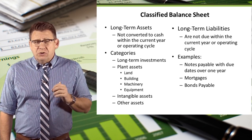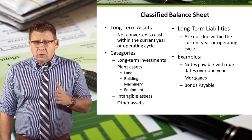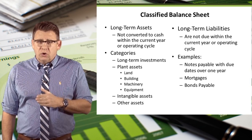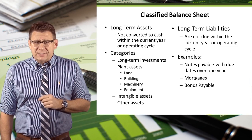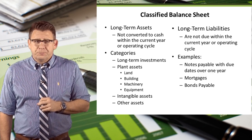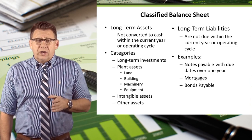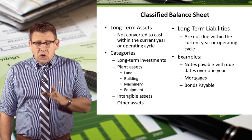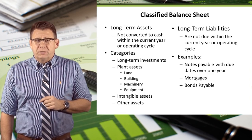Assets which have useful lives longer than one year, or will require more than one year to be turned to cash or sold, are classified as long-term assets, sometimes called non-current assets. Liabilities which take longer than one year to pay off are classified as long-term liabilities, sometimes called long-term debt.